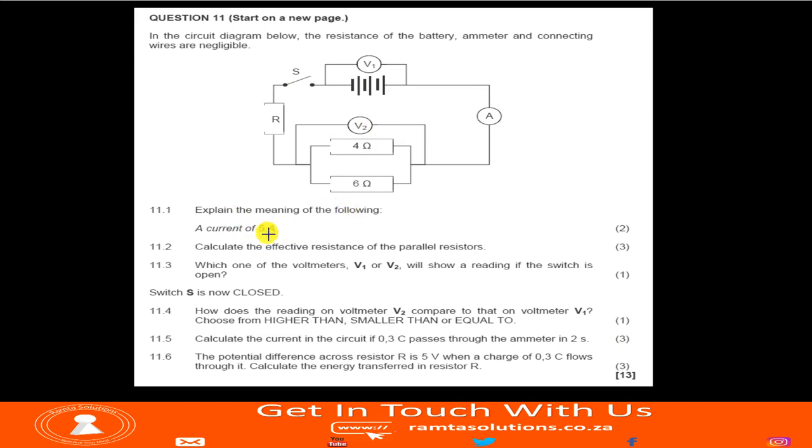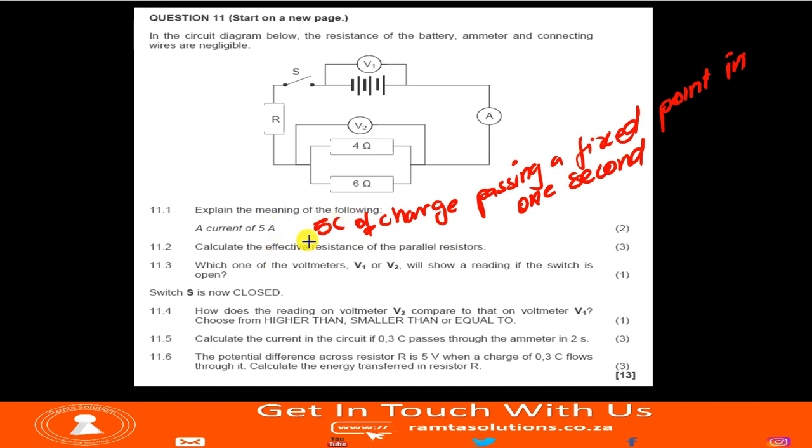So this is the circuit. They say, explain the meaning of the following, a current of five amperes. If you remember the definition of current, whereas current amount of charge passing a point, a fixed point to be precise in one second. So what does this mean? This means we are saying that this is five coulomb, the writing with the yellow one, right? So a current of five amperes would mean you have five coulomb of charge passing a fixed point.